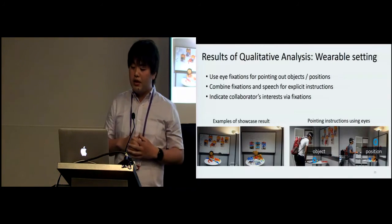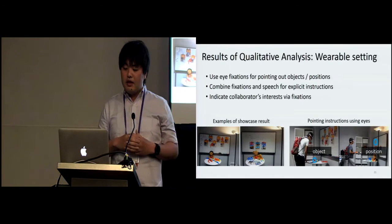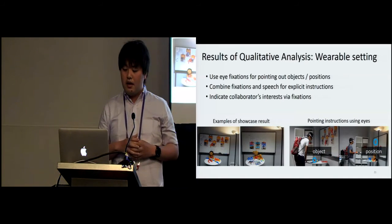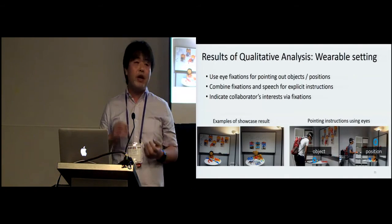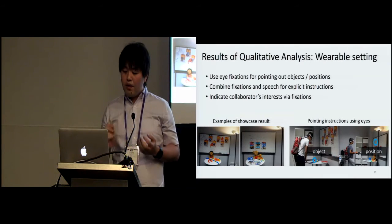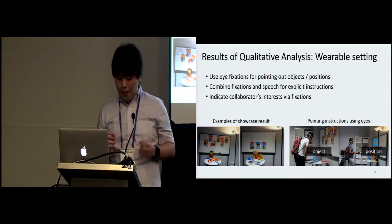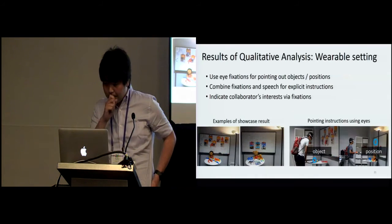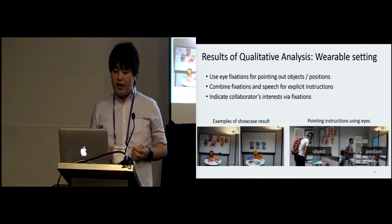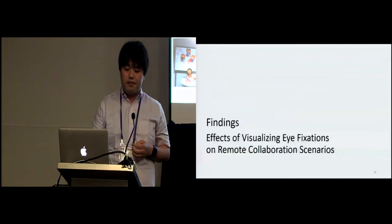All participant pairs succeeded in making their showcase. Participants used eye fixations for pointing out objects across places. When the collaborator gave pointing instructions via eye fixations, they used speech such as 'can you take it?' so workers could easily distinguish the collaborator's instructions from eye fixations. As an important finding, workers mentioned they could know where the collaborator was interested in, because the collaborator's eye position was always shown on the HMD.